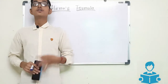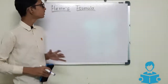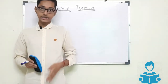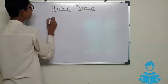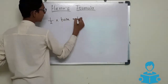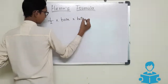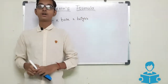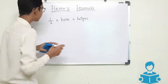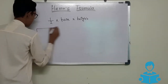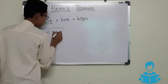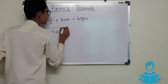Hey guys, welcome back to my channel. Today in this video we will learn what is Heron's formula. Heron's formula is used to find the area of a triangle. We all know the area of a triangle is half into base into height, but according to Heron's formula the area of triangle is under root s multiplied by s minus a, multiplied by s minus b, multiplied by s minus c.